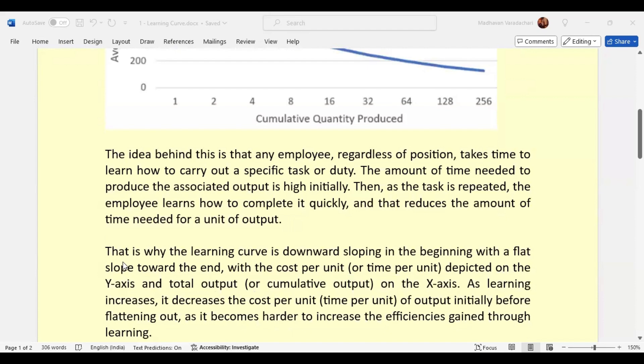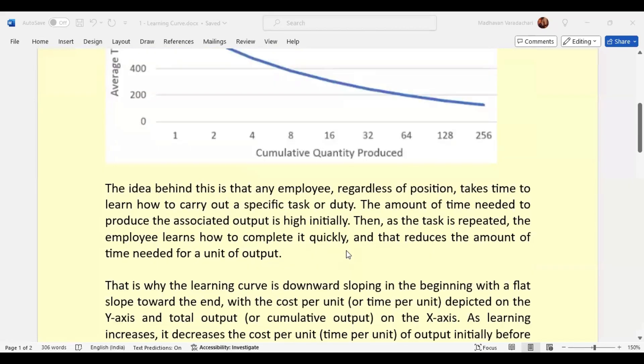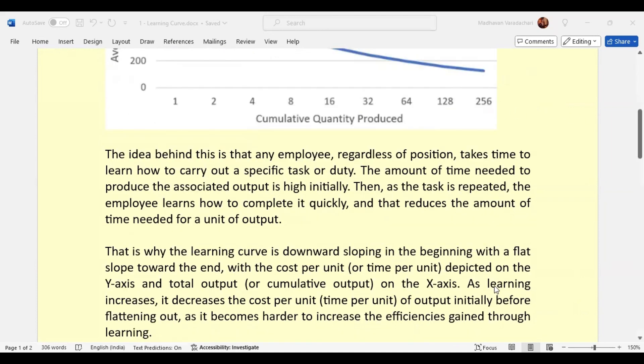That is why the learning curve is downward sloping. We are seeing downward sloping in the beginning with a flat slope towards the end. If you carry on further, it may become constant, means it will become flatter, depicted on the y-axis with time per unit, and total output or cumulative output on the x-axis.